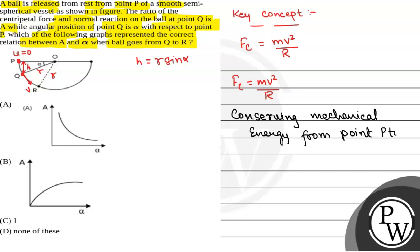At point P we have the potential energy that is mgH and kinetic energy is 0 at point P. At point Q the potential energy becomes 0 as we are taking this line as the datum and the kinetic energy is a half mv squared. From here we have v is equal to root over 2gH and H is R sine alpha.